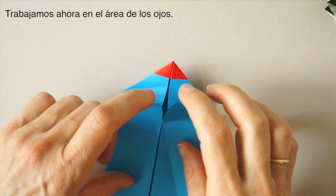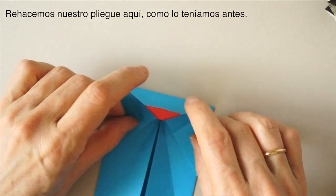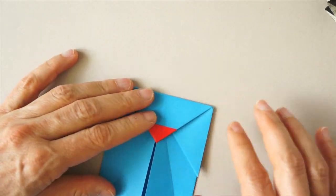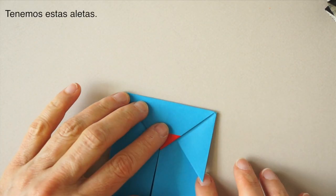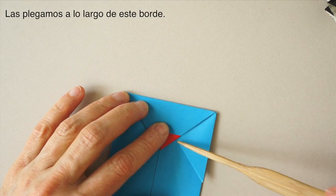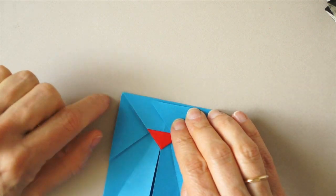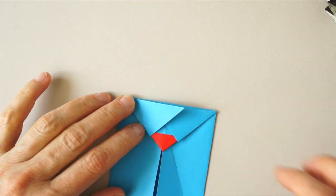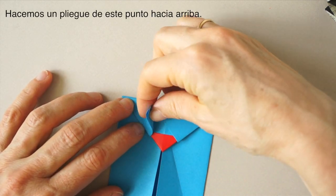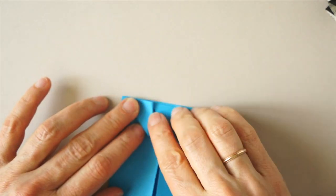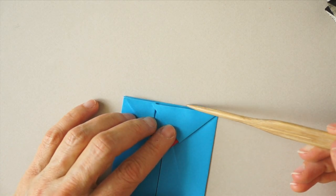We are going to proceed to work on the area of the eyes and bring these flaps back and collapse, as we have done previously. Then we have these flaps. We are going to fold them along here and here. Then we are going to create a fold from this point up. Same here to the other side.